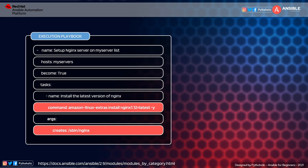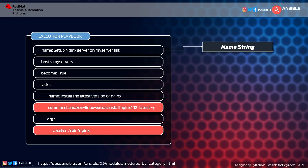When we wrote a playbook previously, we made use of the existing modules and parameters to execute the operation. Let's understand this playbook and clarify these terms. The first one is 'name: setup nginx server on my server list' — this is our name string. The second is 'hosts: my_servers', which is the host group pattern containing all the hosts in that group.